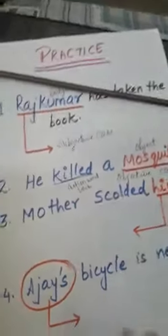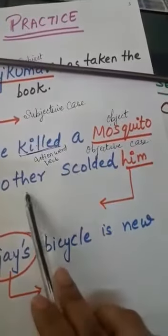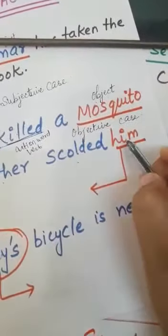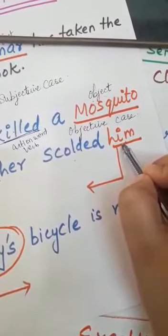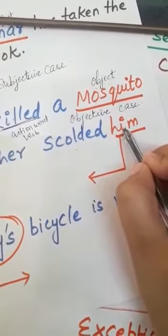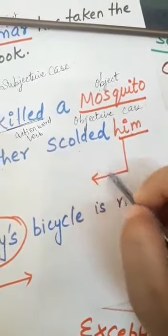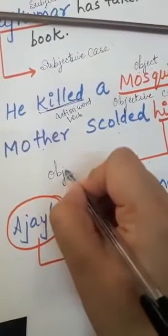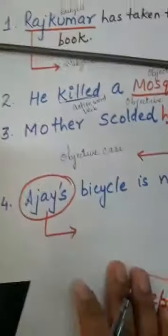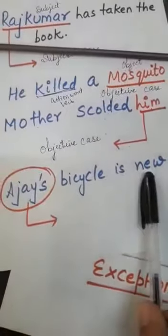Let's take a third example: mother scalded him. Here mother is the subject, scalded is the verb, and him is the object — the receiver of the action. Him is a pronoun used as an object of the verb 'scalded', so this sentence is said to be in objective case.